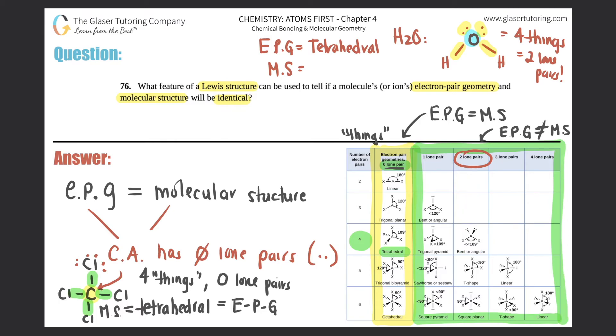So that's the difference. What feature of a Lewis structure can be used to tell if a molecule's electron pair geometry and molecular structure can be identical? The feature basically is whether the central atom has lone pairs or not. If they don't have lone pairs, then they would be exactly the same. But if they do have lone pairs, then the two identifications would be different. And that is the answer to 76.